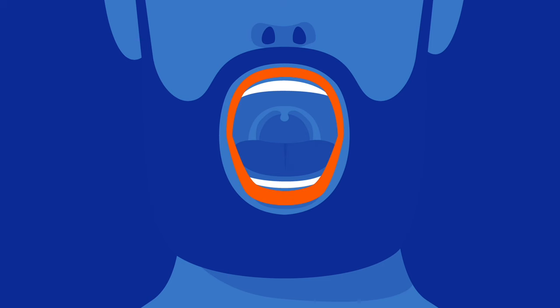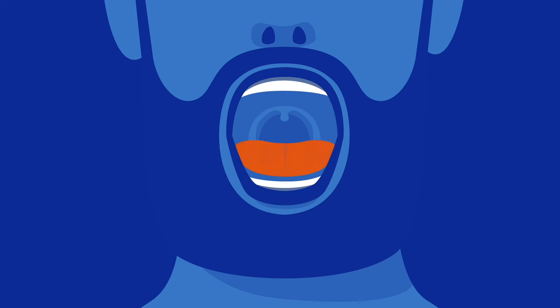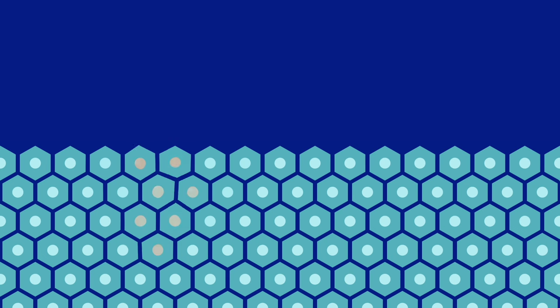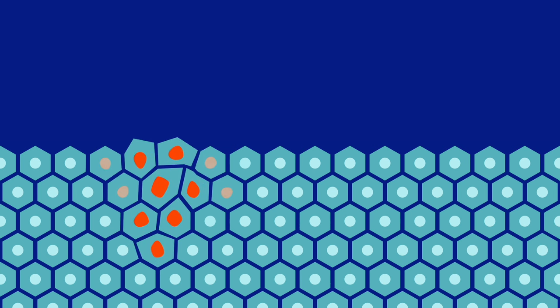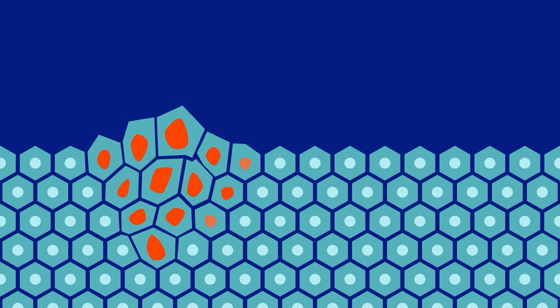Oral cancer, also called mouth cancer, forms in the oral cavity, which includes all parts of your mouth that you can see if you open wide and look in the mirror — your lips, gums, tongue, cheeks, roof, or floor of the mouth. Oral cancer forms when cells on the lips or in the mouth mutate. Most often they begin in the flat, thin cells that line your lips and the inside of your mouth.